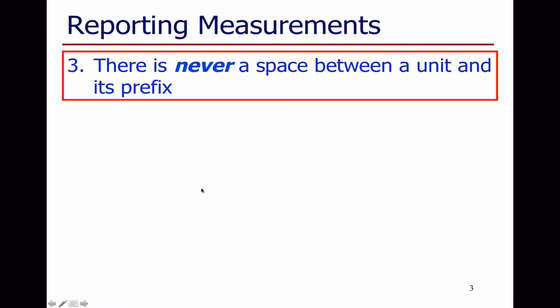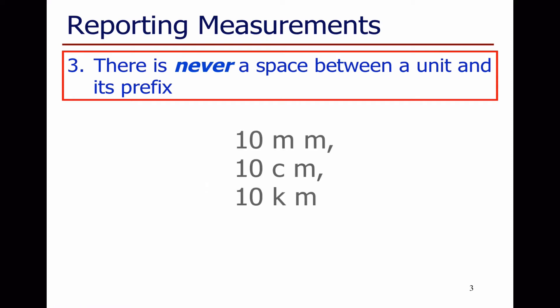But there's never a space between a unit and its prefix. For example, we never write '10 m m' if we want to mean 10 millimetres, and we don't write '10 c m' for 10 centimetres, or '10 k m' for 10 kilometres. No space between a unit and its prefix.